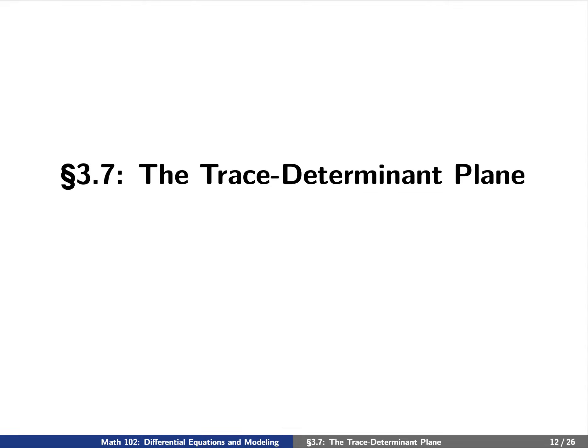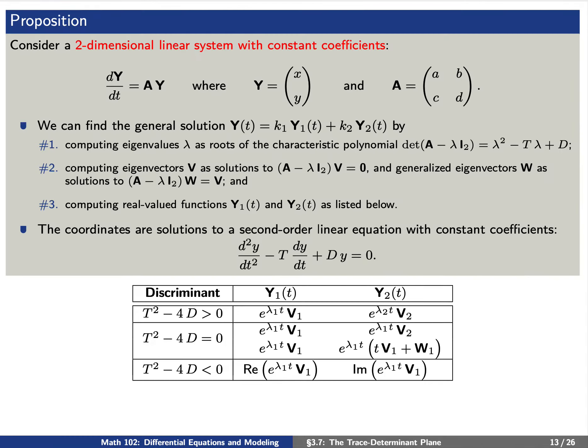Today we're going to talk about the trace determinant plane. Let's review by going over some properties of two-dimensional systems. If we have a two-dimensional system dy/dt = Ay, where A is a 2×2 matrix with constant coefficients, we find the general solution Y(t) as follows. First, compute eigenvalues λ as roots of the characteristic polynomial λ² − Tλ + D. Second, compute eigenvectors v and possibly generalized eigenvectors w. Third, compute real-valued functions Y₁ and Y₂ according to the table.